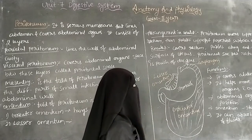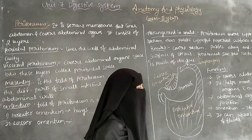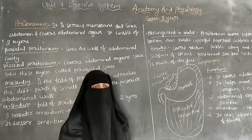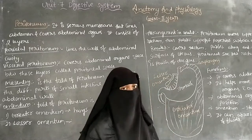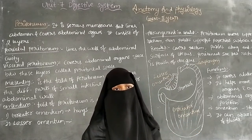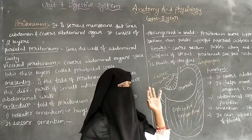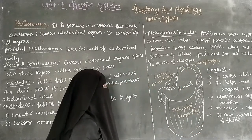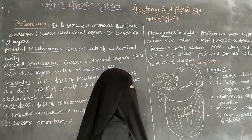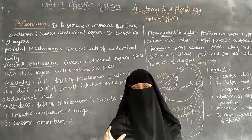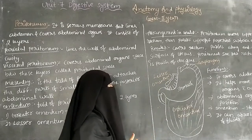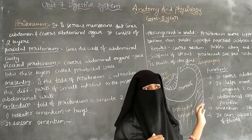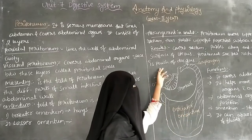In females, the peritoneum covers the rectum and passes over the anterior and posterior surface of the uterus. The peritoneal sac present between the rectum and the uterus is called the pouch of Douglas.